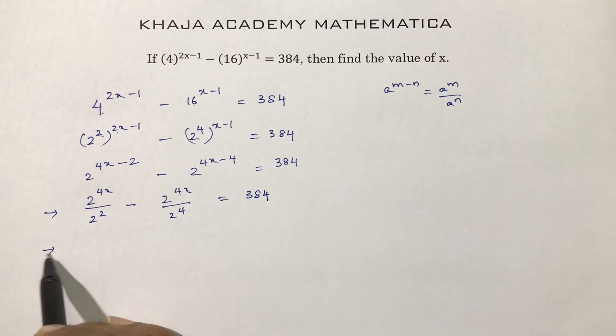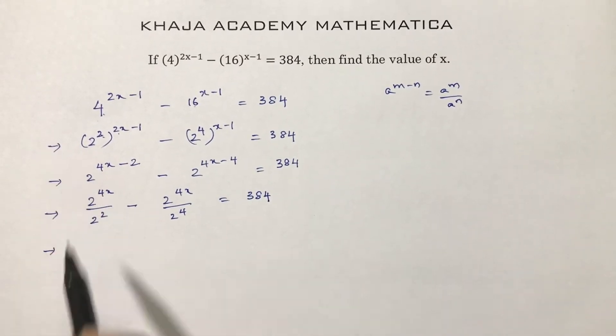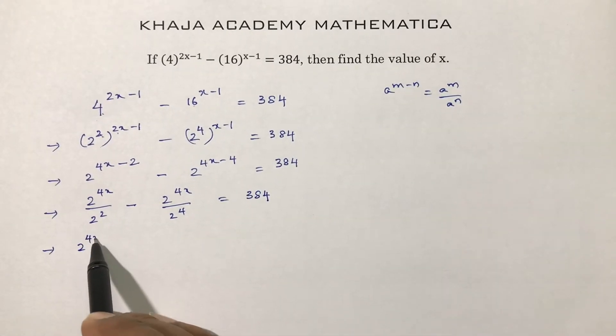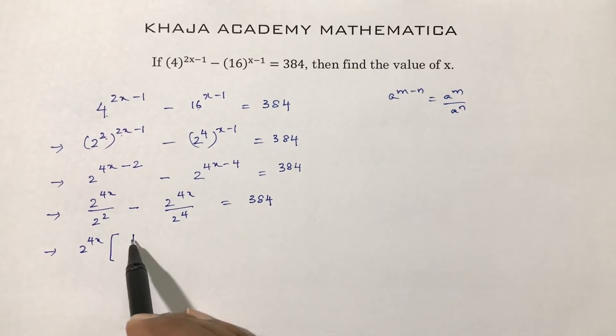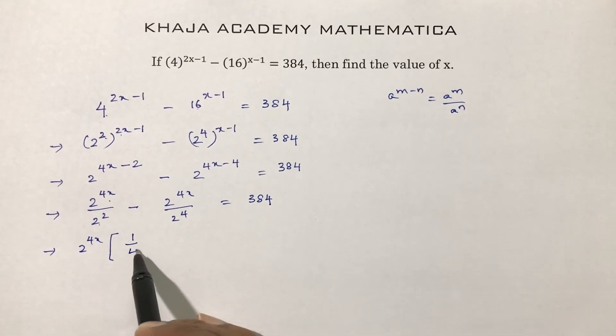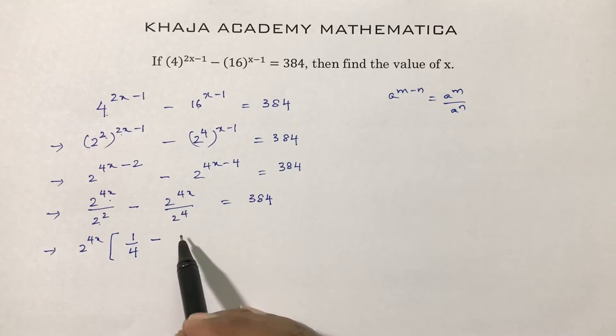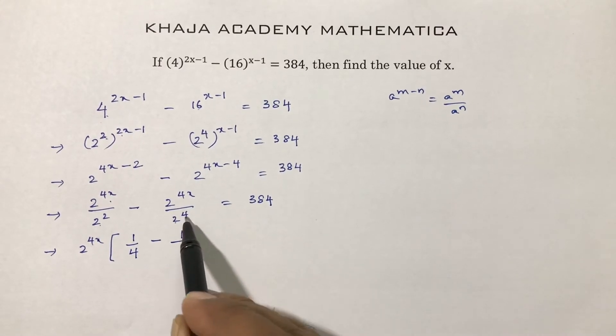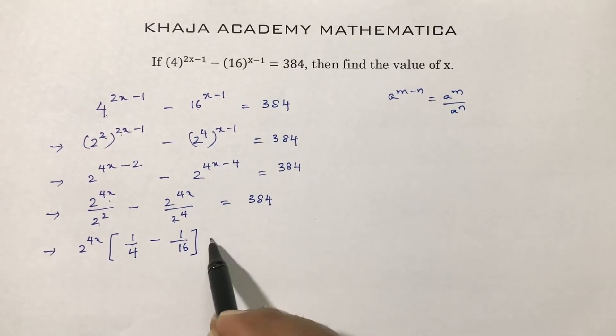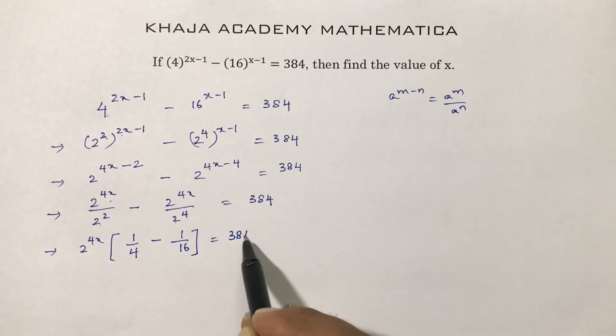So here now 2 power 4x, if I will take common, you are left with 1 by 2 square, so 1 by 4. Here 2 power 4x if I will take common, 1 by 2 power 4 is 16, equals 384.